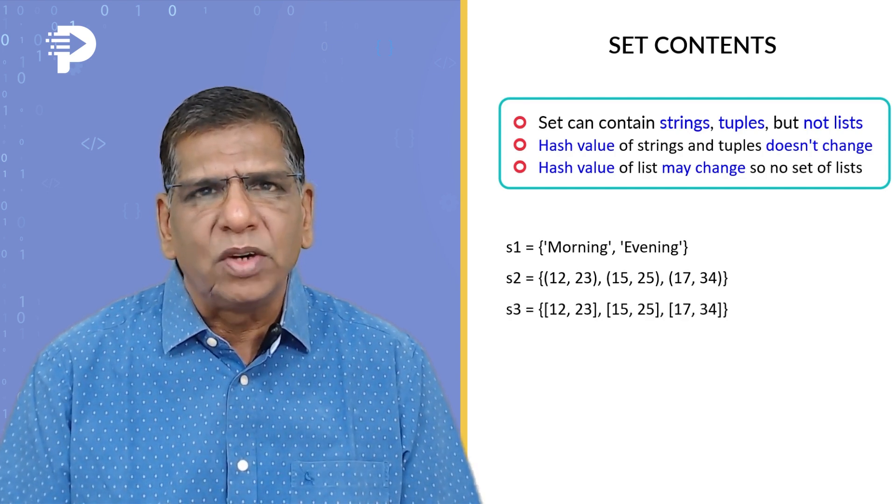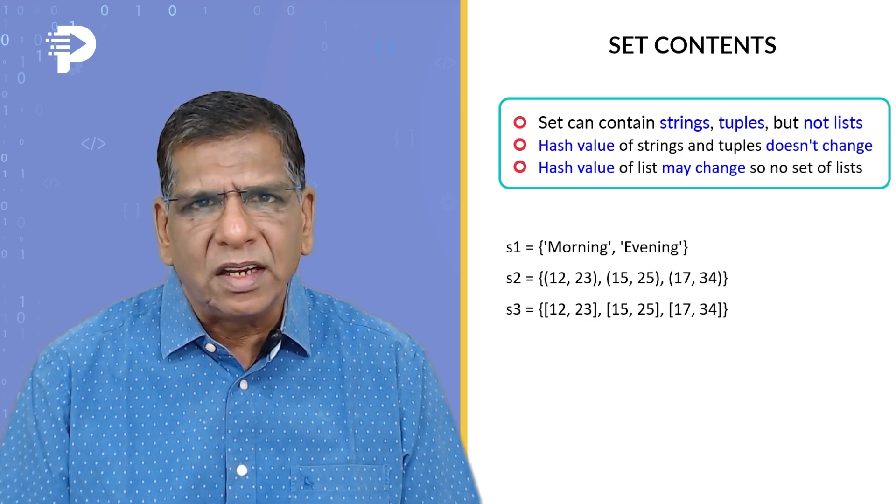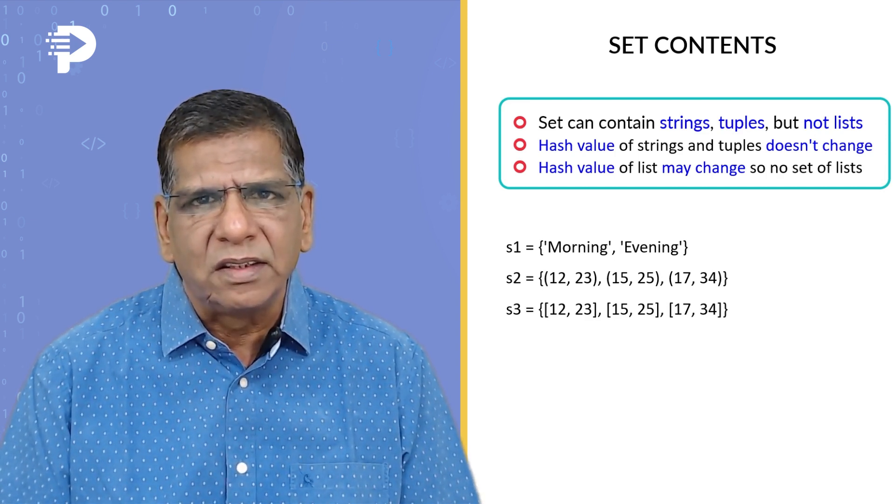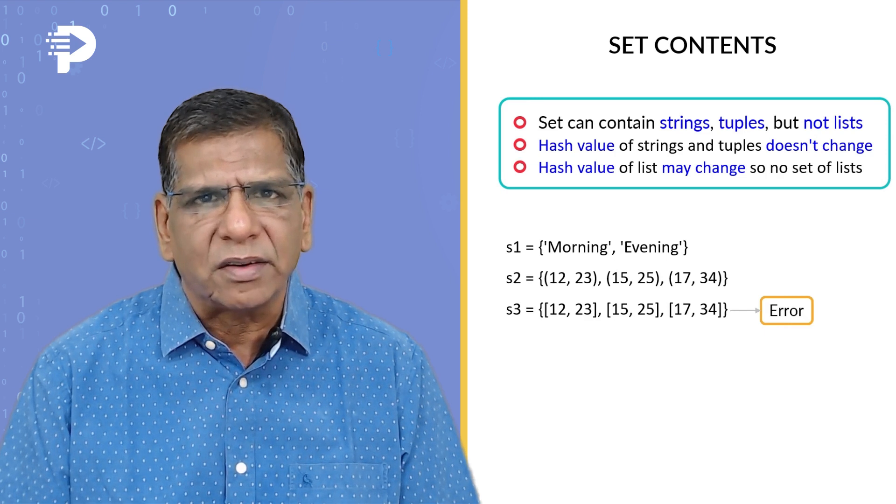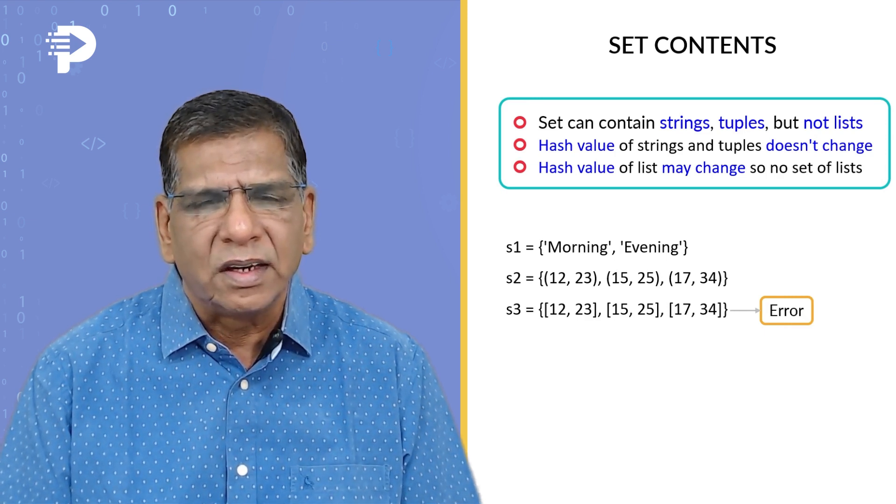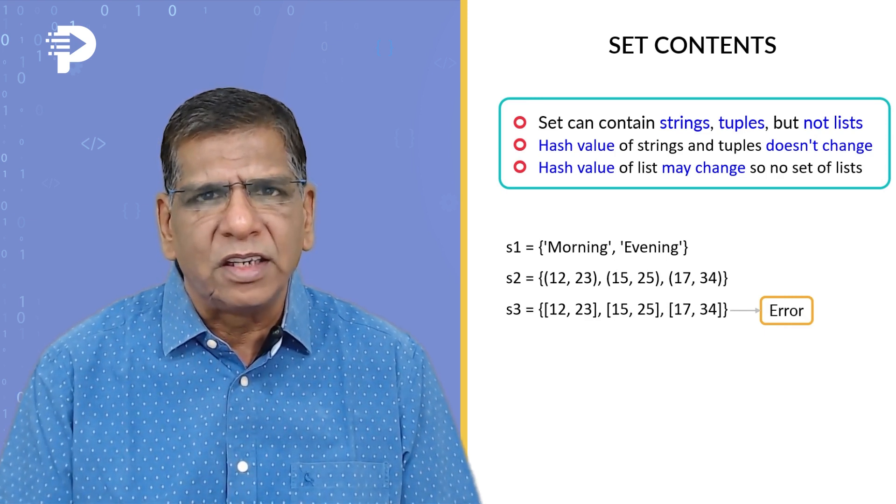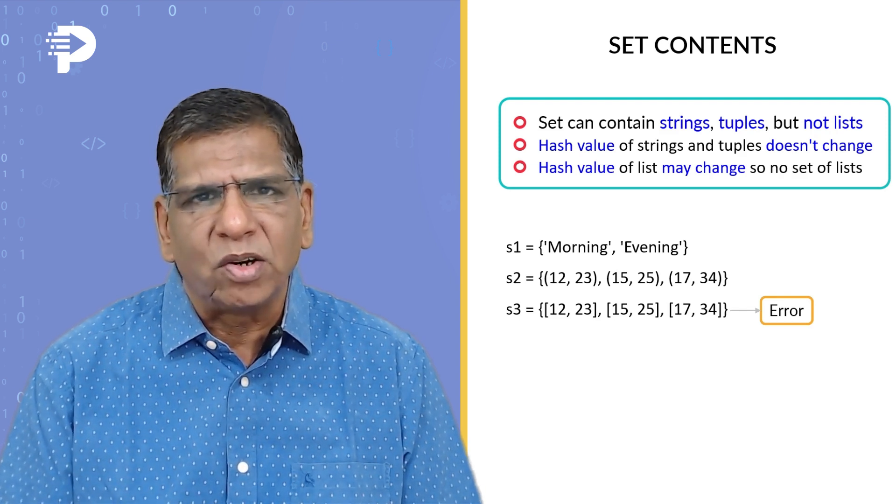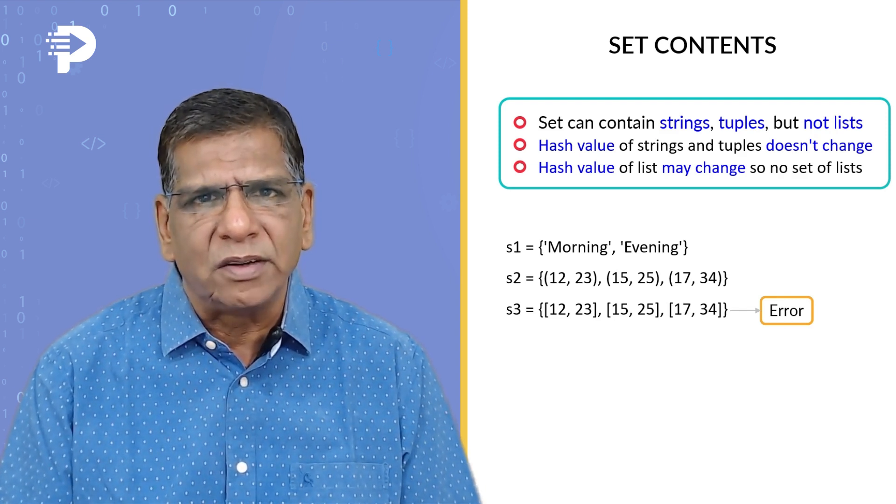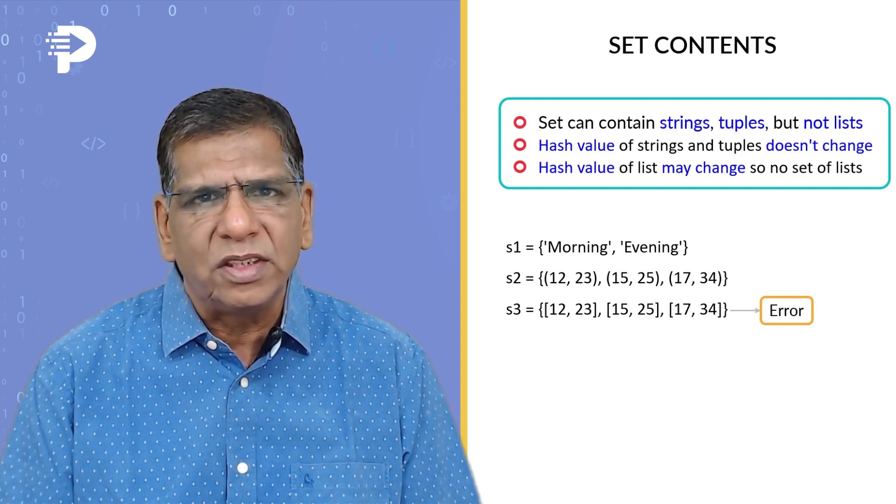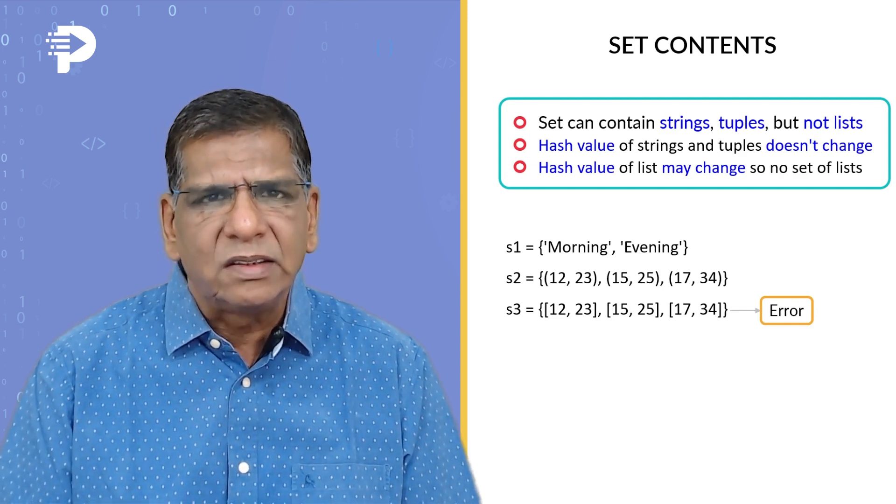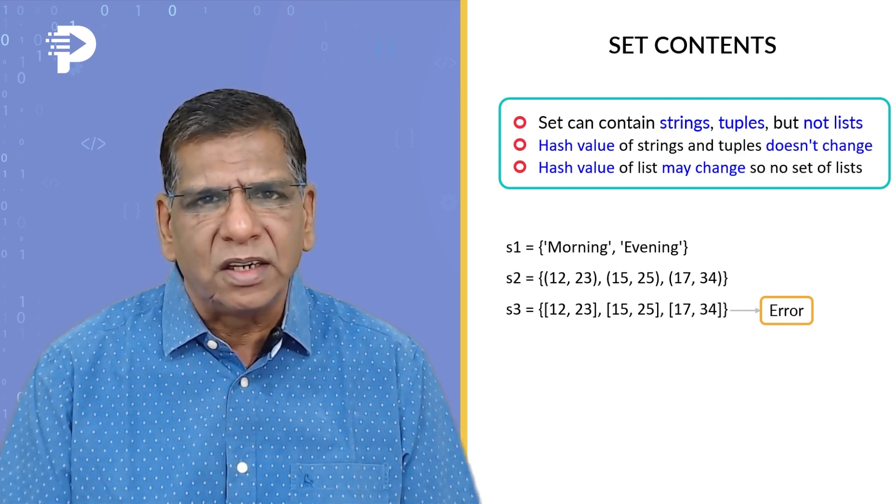But if I try to create a set containing list as its elements, this is something that would report an error. Lists are mutable. 12, 23 are present right now. You may later on change to 12, 23, 17. The moment the contents change, the hash value would change. Hence, you can never accommodate a list within a set.